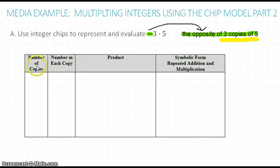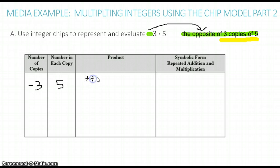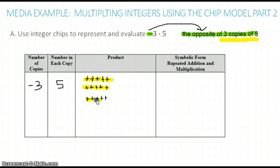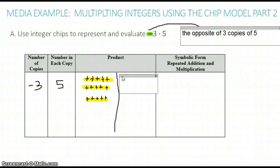So let's fill in our chart. Our number of copies is negative 3 — and again, we're going to think of this as 'the opposite of.' The number in each copy is 5. So now let's find 3 copies of 5. There's one group of 5, another group of 5, and another group of 5. So we have 3 copies of 5.